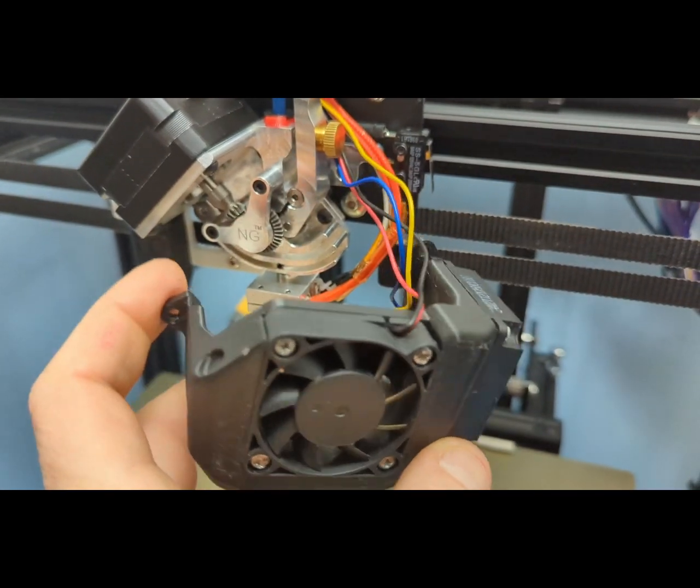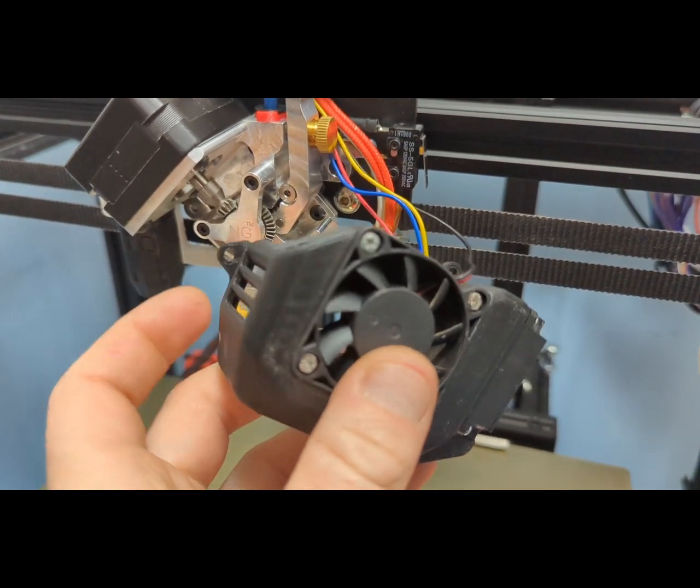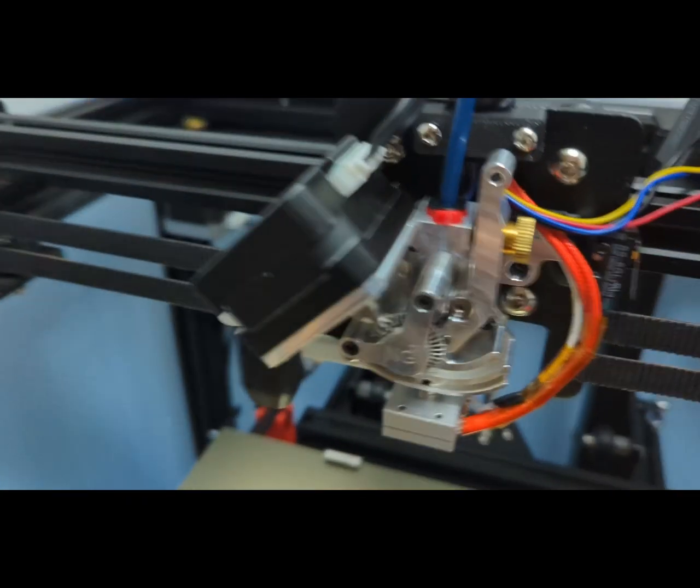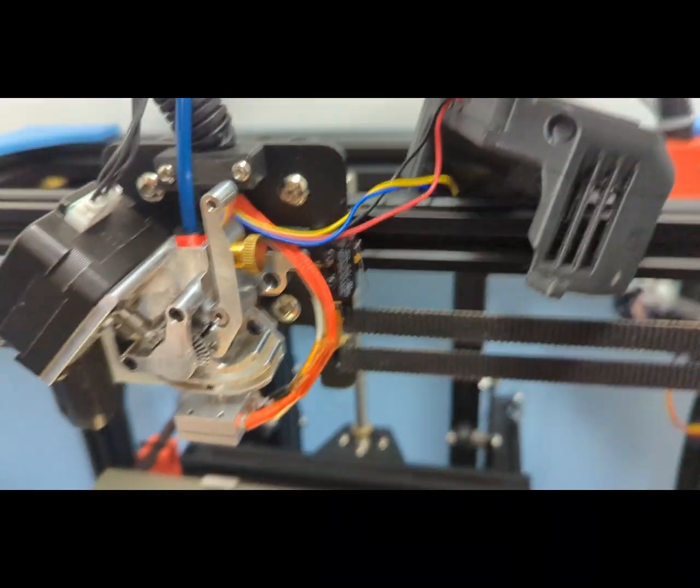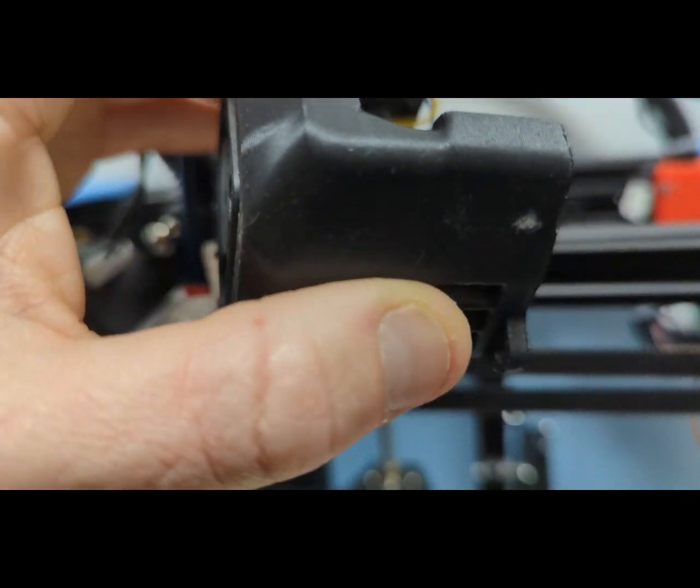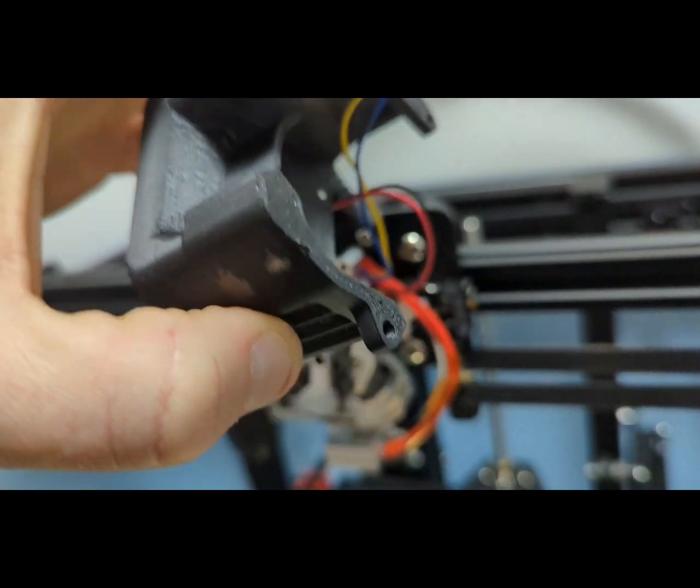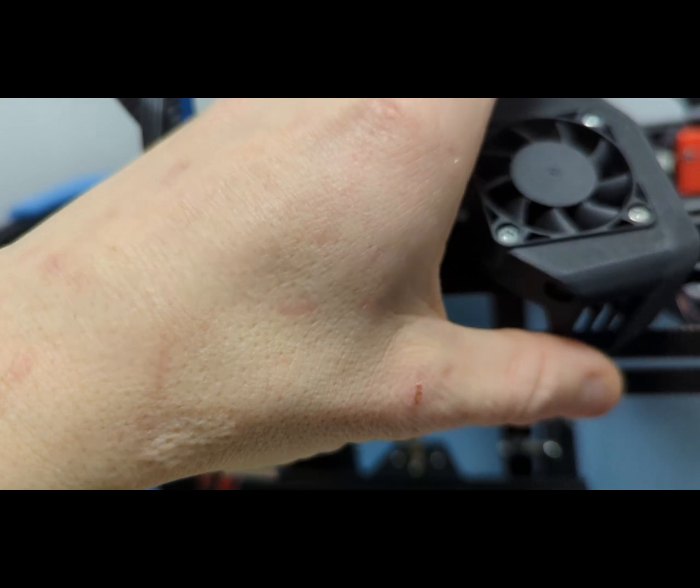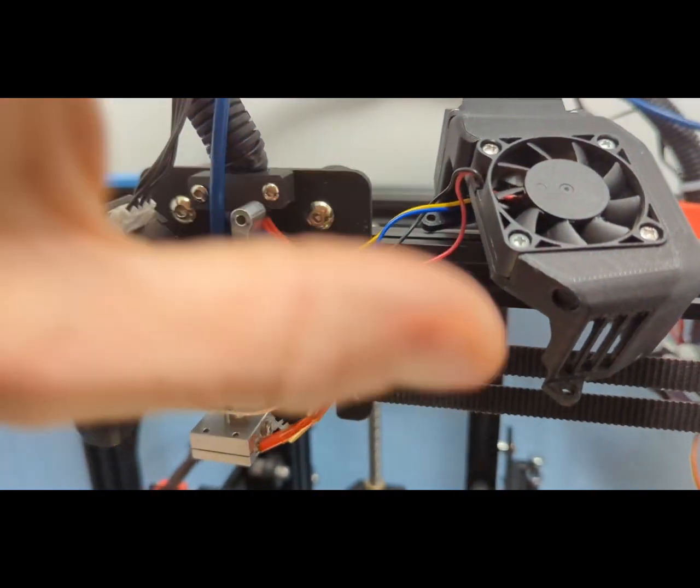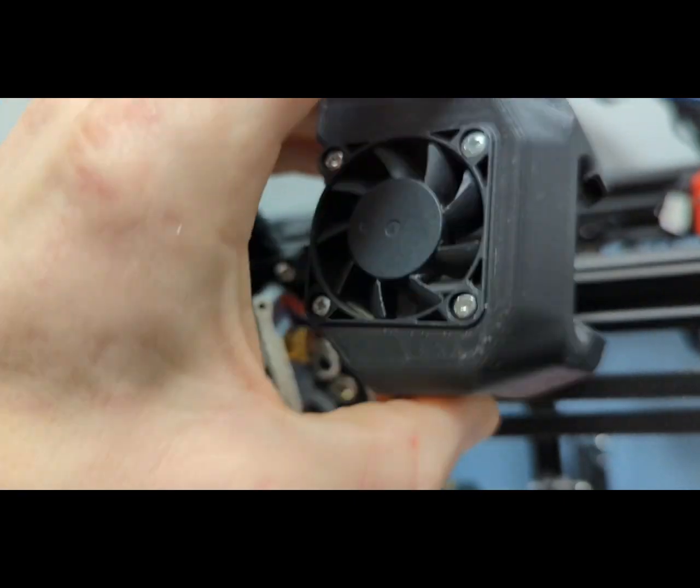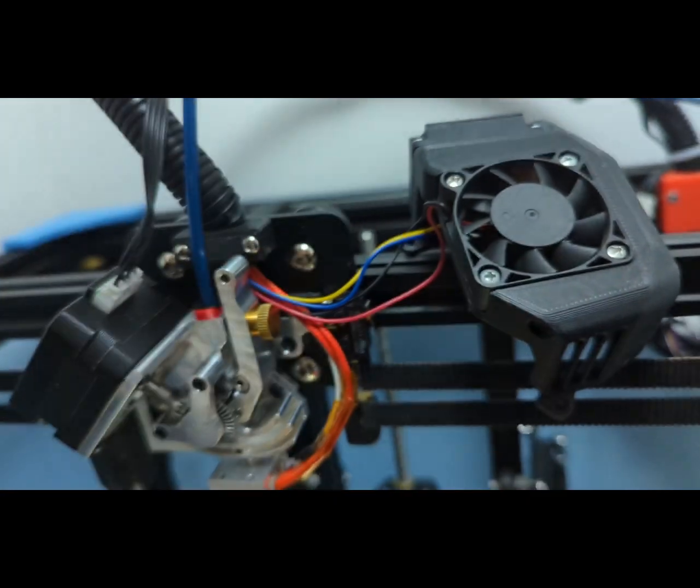You can see here, I've got the fan shroud removed. That is just two screws that mount it to the main extruder body. It's a nice printed piece that comes with the kit. I'm guessing it's an ABS or similar. Really nice. I did a little bit of clean up just from some stray stringing on it, but that even probably wasn't necessary.